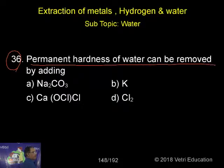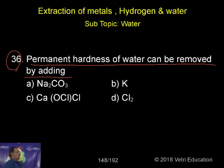Permanent hardness of water can be removed by — when you say hardness, there are two types of hardness. One is temporary hardness, another is permanent hardness.